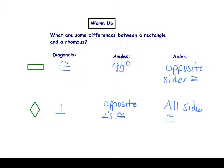Here are the differences. What makes the rectangle special is that its diagonals are congruent, and it has four right angles — so all of its angles are congruent. What makes the rhombus special is first and foremost that all of its sides are congruent, and its diagonals are perpendicular as well. So let's go to the next page.